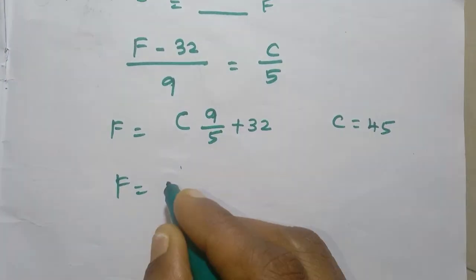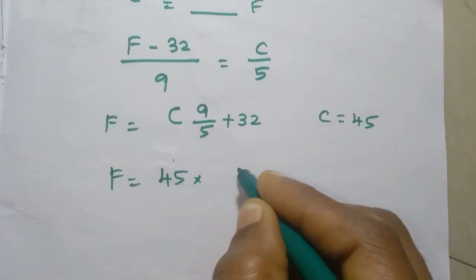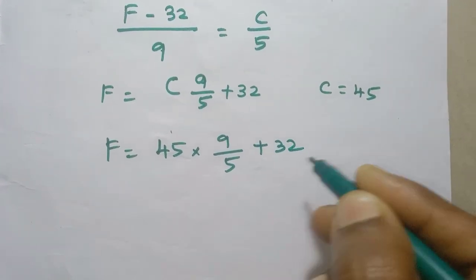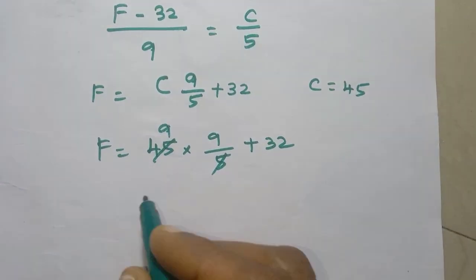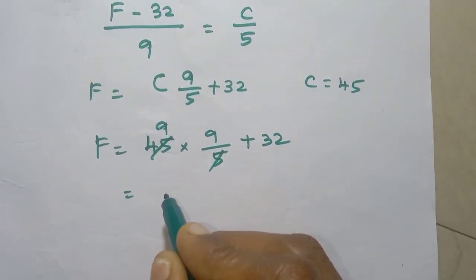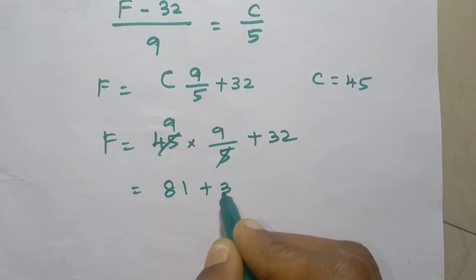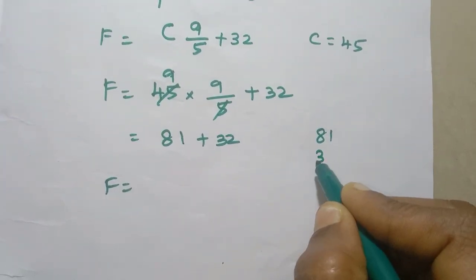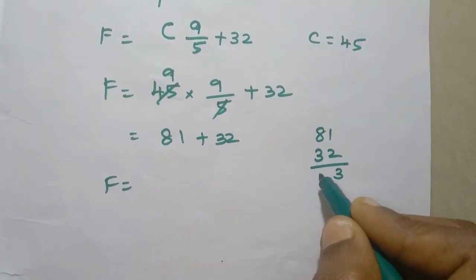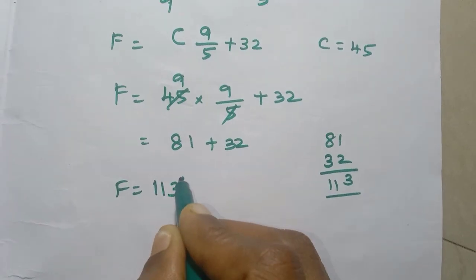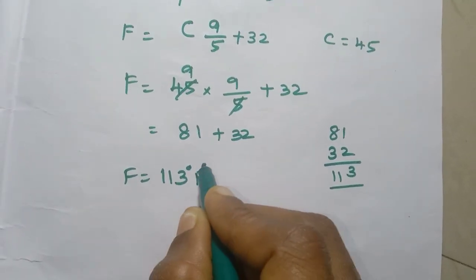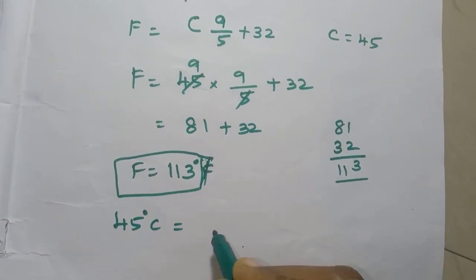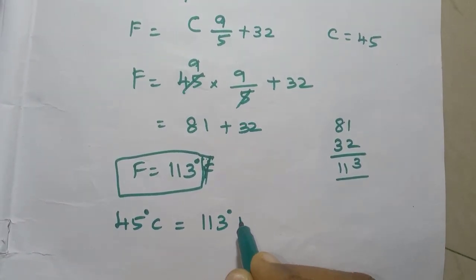F equals 81 plus 32. Adding 81 plus 32: 1 plus 2 is 3, carry 1 — 113 degrees Fahrenheit. So 45 degrees Celsius equals 113 degrees Fahrenheit.